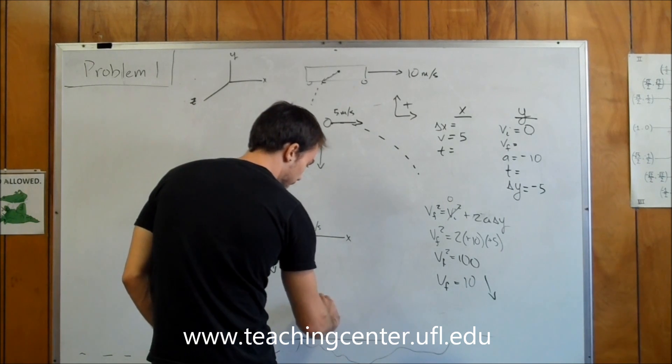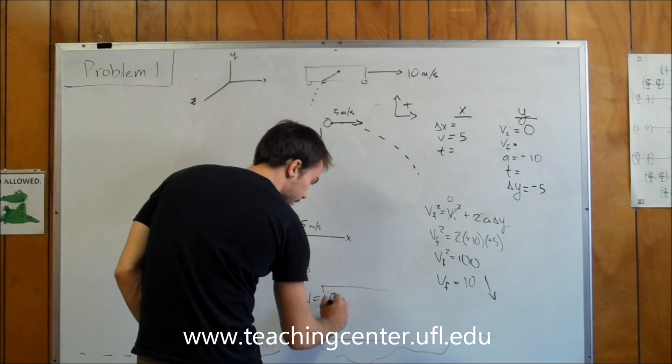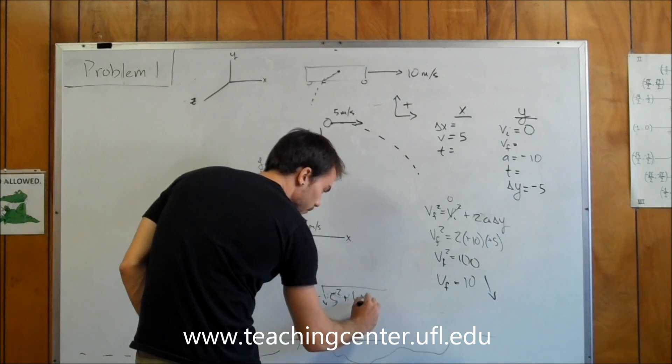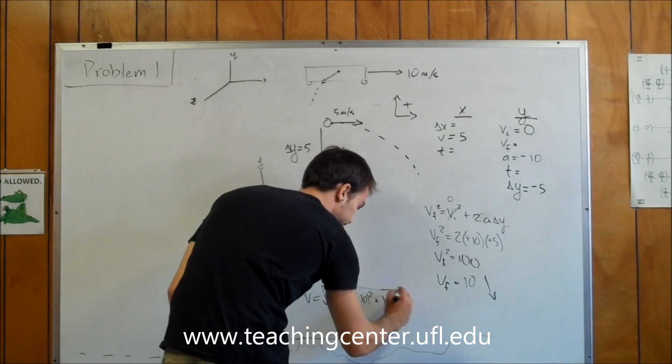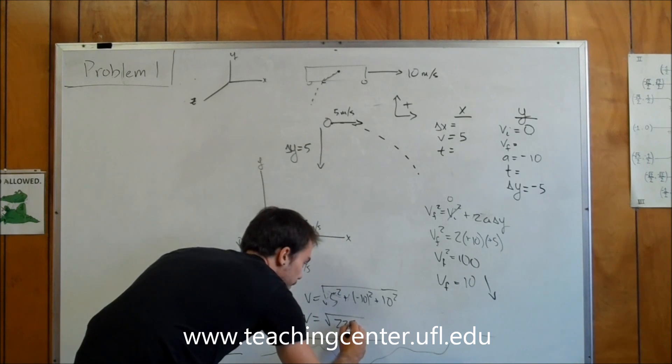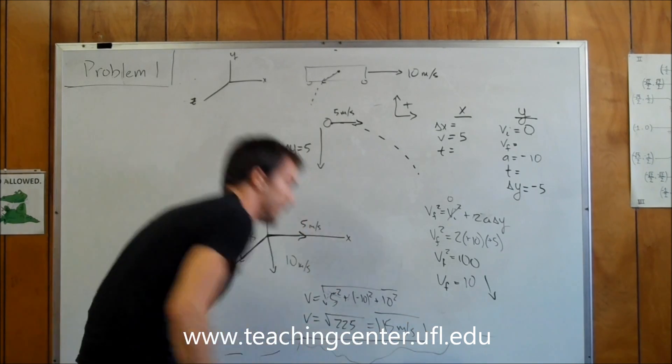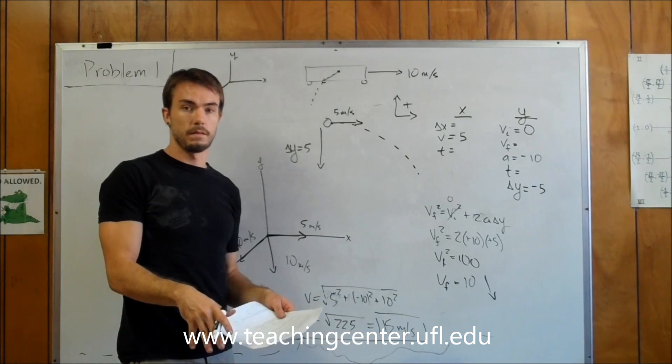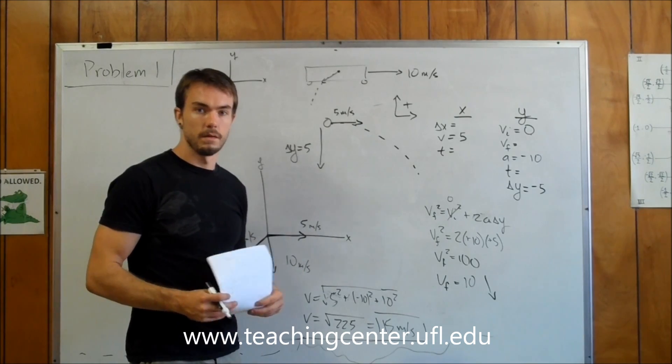The velocity is the sum of the squares. In the X direction, we have 5. In the Y, we have negative 10, which won't matter because we're defining magnitude. In the Z, we have 10. So our velocity equals the square root of 225, or 15 meters per second. This is the total velocity including all three axes right before it hits the ground. That's your answer for problem one.